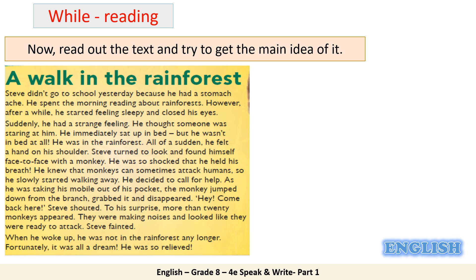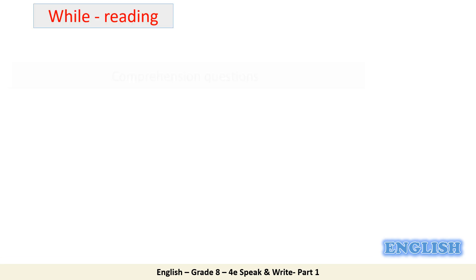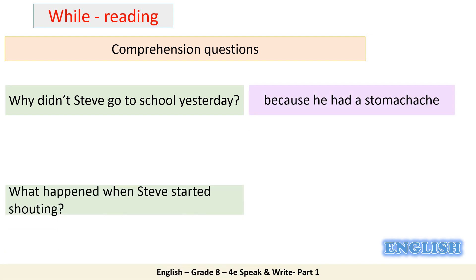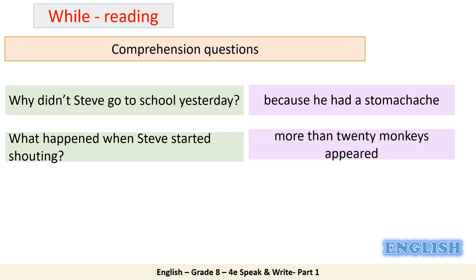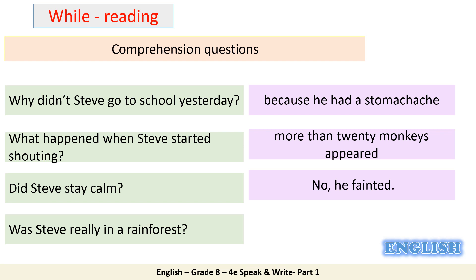So what do you think the text is about? Excellent — it's about a boy who had a bad dream. Now let's have some comprehension questions related to the text. Why didn't Steve go to school yesterday? Because he had a stomach ache. What happened when Steve started shouting? More than 20 monkeys appeared. Did Steve stay calm? No, he fainted. Was Steve really in a rainforest? No, it was a dream.